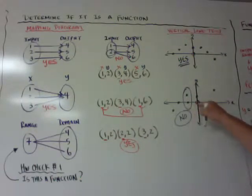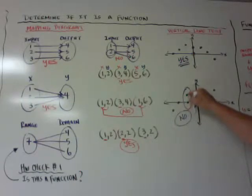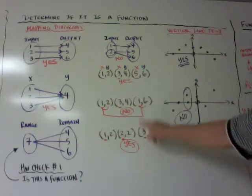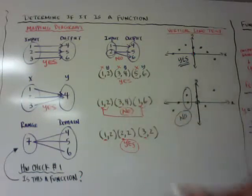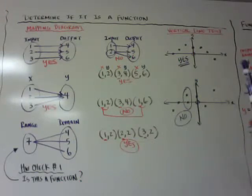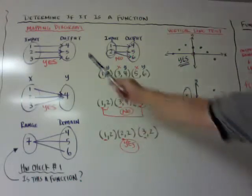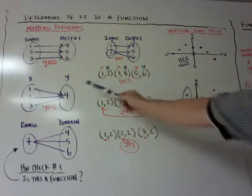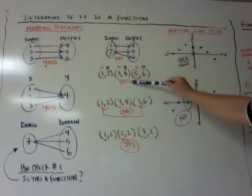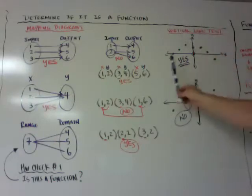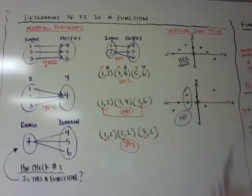Think about it: when two dots hit the vertical line, the x-coordinates are the same but they have two different y-coordinates — just like having the same x with two different y's in a list. That's how you determine if something is a function. They might give it three ways: a mapping diagram, coordinate pairs, or a graph where you use the vertical line test.